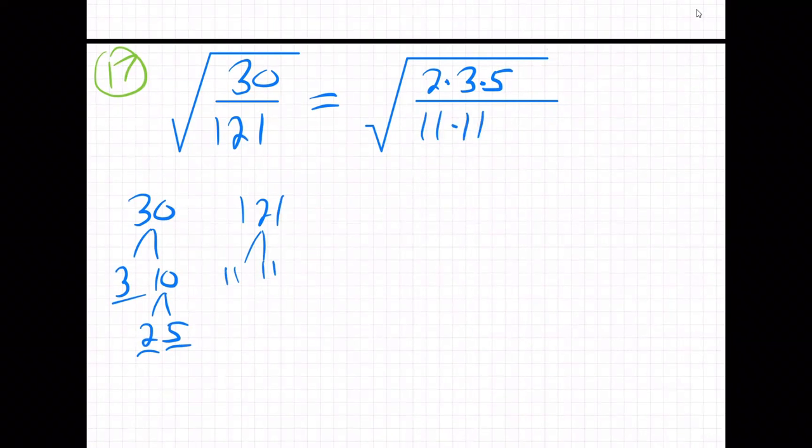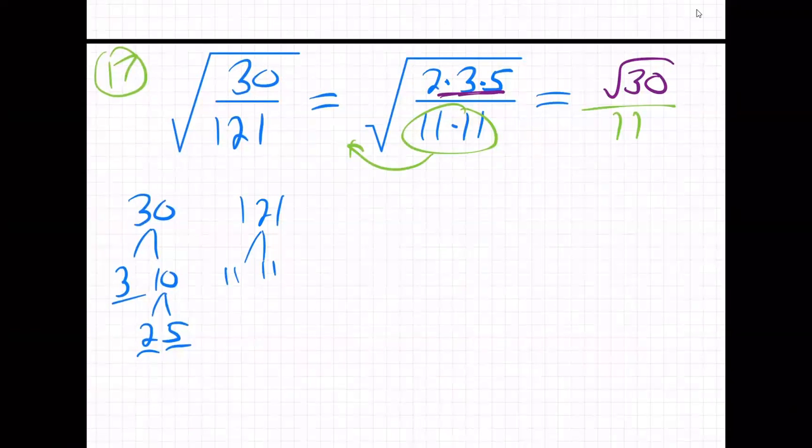I break them down like that, and then I see on the bottom I have two 11s, so I can send out a plain 11. But on the top, nothing can come out. So they just go back together and make square root of 30—that's our answer.